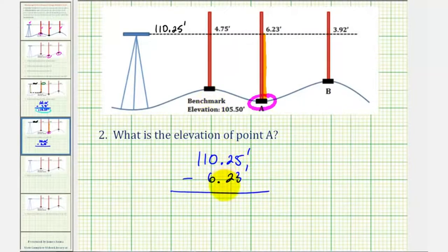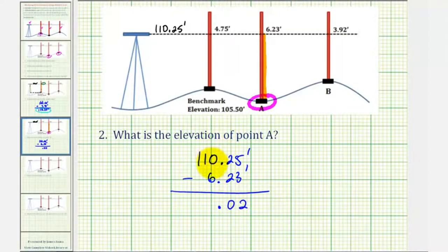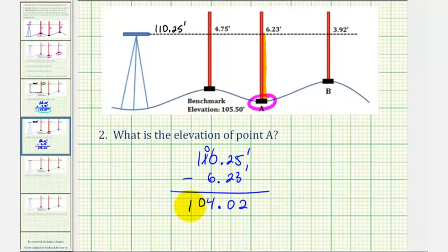Lining up the place values on the decimal point, bring the decimal point down, and subtract from right to left: five minus three is two; two minus two is zero. Here we have a zero in the ones place value, so we make an exchange with the tens place value — take one from there, leaving zero, which gives us ten ones. Ten minus six is four, then we have a zero and a one. So the elevation at point A is 104.02 feet, or 104 and two hundredths feet.